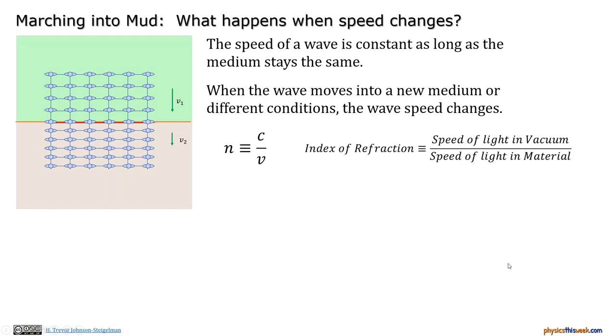Now, we have a definitional equation called n equals c over v. This defines the index of refraction to be the speed of light in vacuum divided by the speed of light in the particular material. Now, the speed of light is given by 2.998 times 10 to the eighth meters per second. And that is a constant as long as you stay in vacuum. So if you've learned that the speed of light is constant, you're almost there. You have to add the caveat to that as long as you stay in vacuum. In other materials, it's going to slow down sometimes quite a bit.